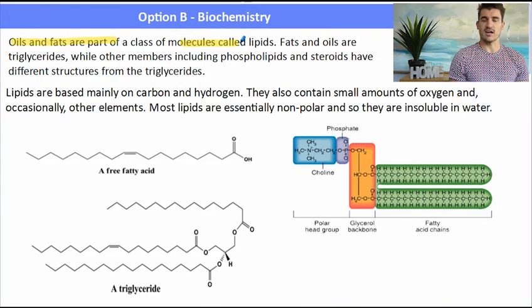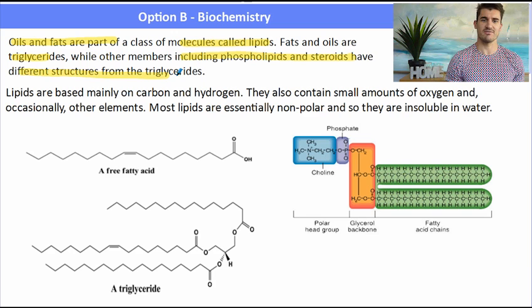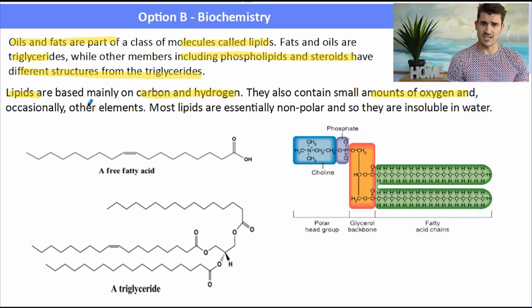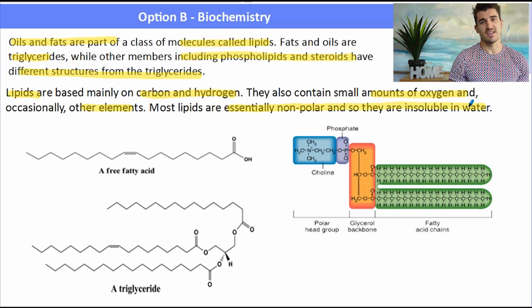Oils and fats are a class of molecules called lipids. Fats and oils are triglycerides, while other members including phospholipids and steroids have different structures from triglycerides. Lipids are based mainly on carbon and hydrogen but they also contain small amounts of oxygen and sometimes other elements. Most lipids are essentially non-polar and they're not soluble in water.